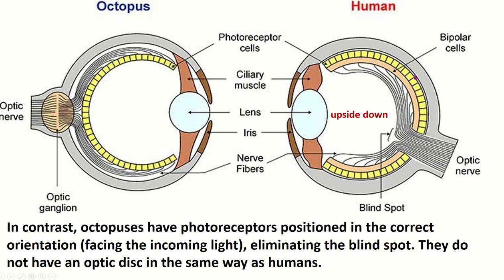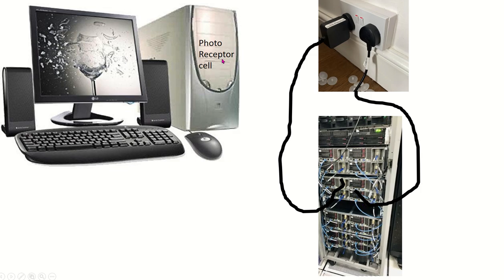In humans, the photoreceptor cells are located in the opposite direction. The most superficially placed optic nerve fibers divide into two parts and leave the eyeball toward the visual cortex. This is the head of the optic nerve. The small depression is known as the optic cup, and the elevated area with small depression is known as the optic disc. The depression area is the optic cup, and the elevated area is the optic disc.